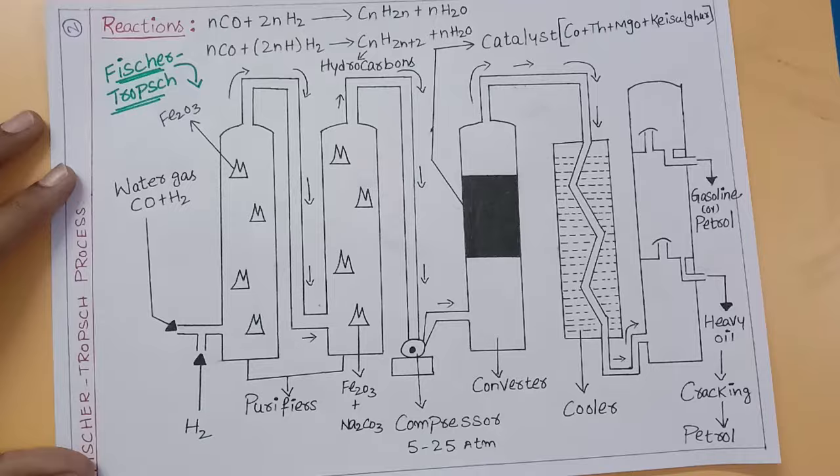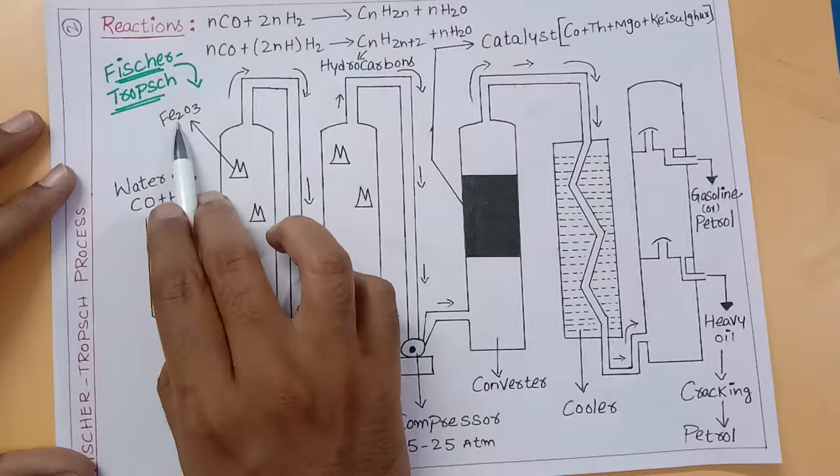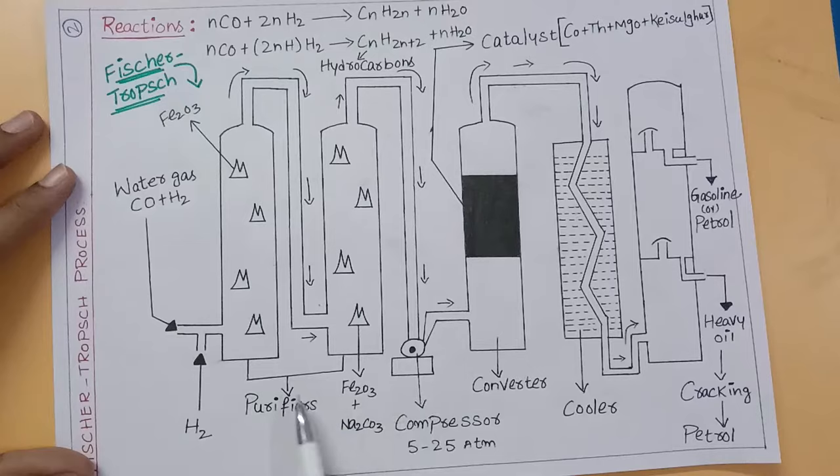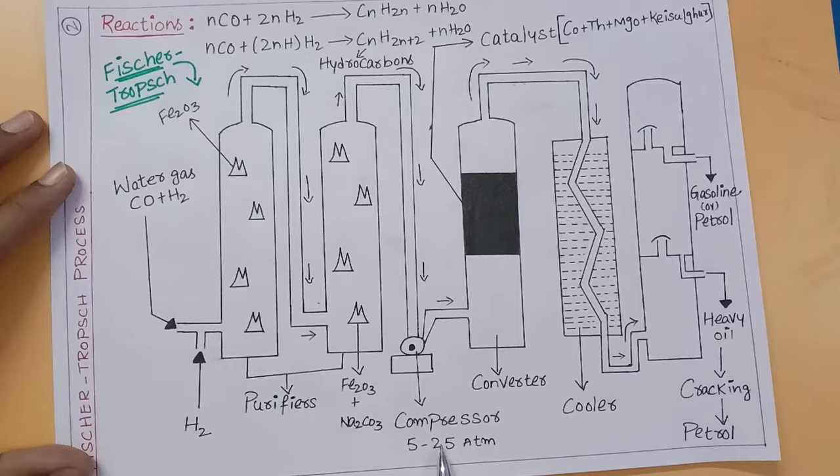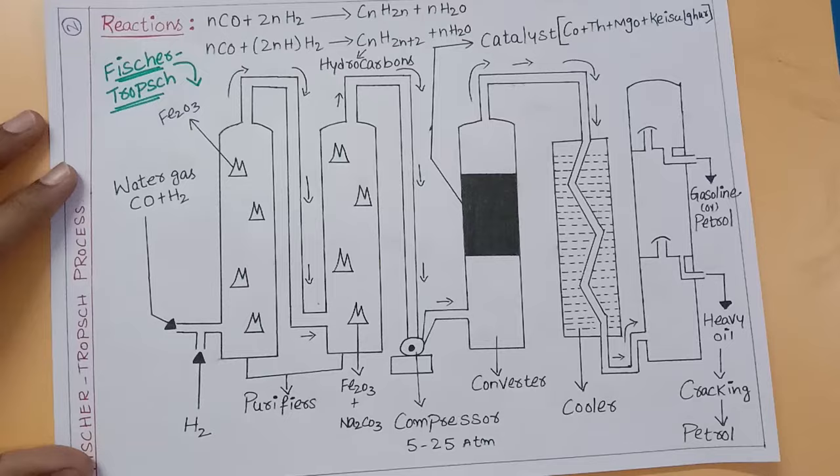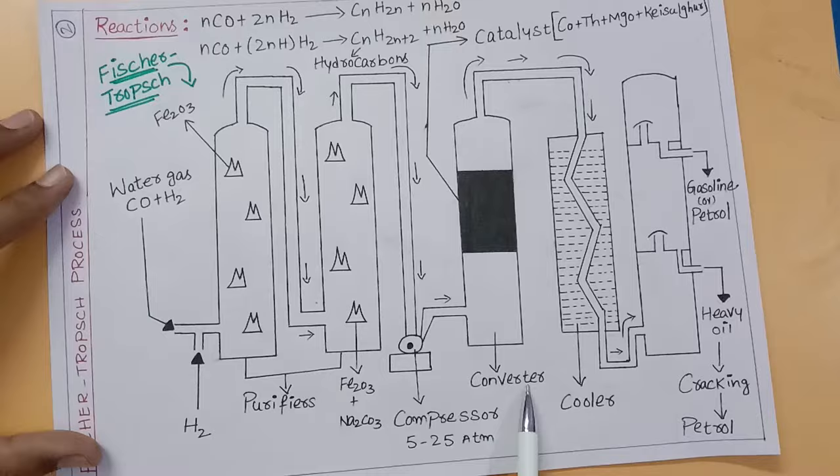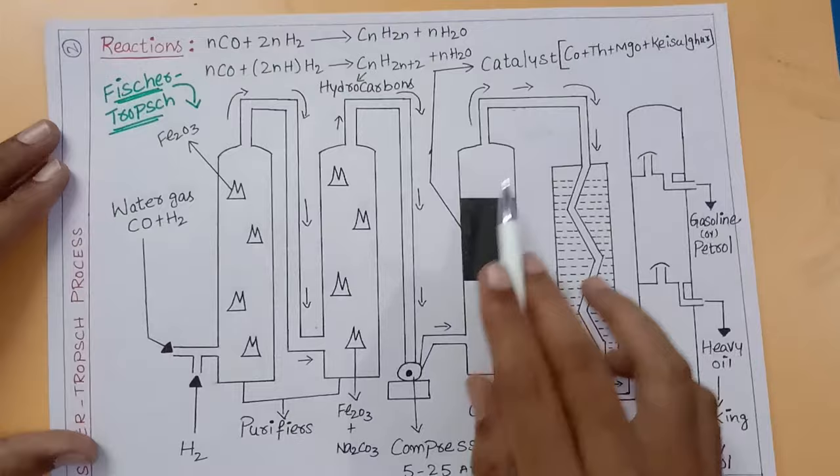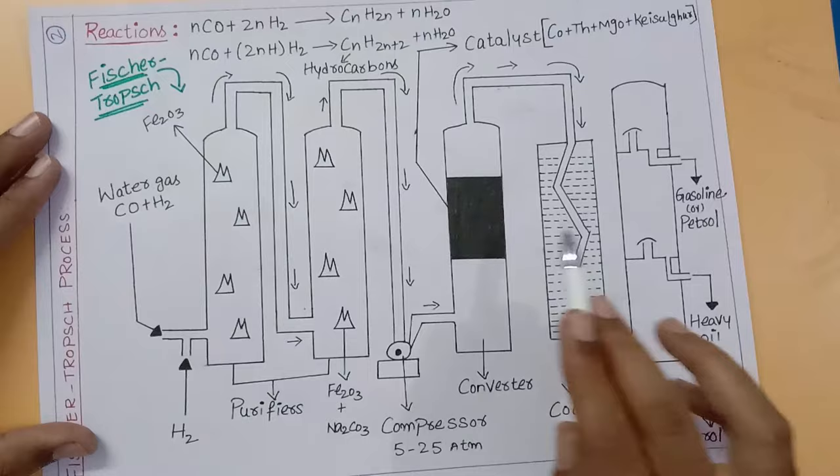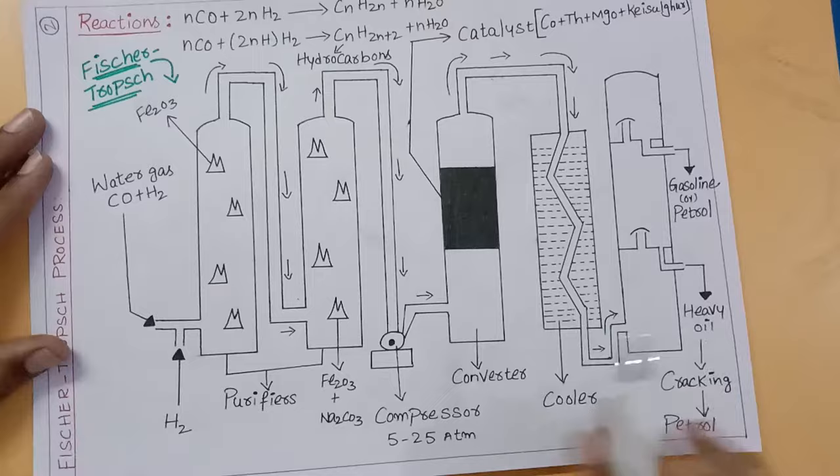We have to study this structure. You have purifiers containing iron oxide and sodium carbonate. Between purifiers and converter is the compressor where vapor is compressed. Heat is generated at about 200 to 300 degrees centigrade. Then the vapors enter the converter column which has catalyst. Then there's a cooler column with cold water to cool the vapors, then the fractionating tower.